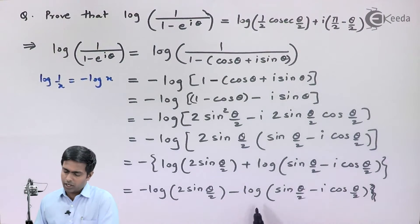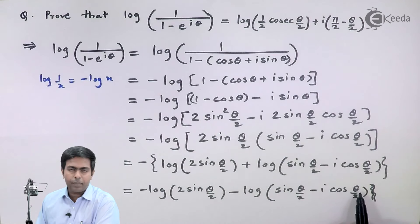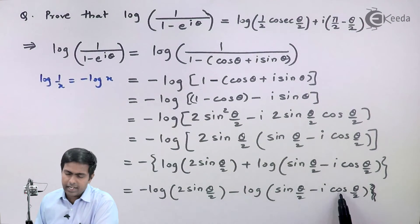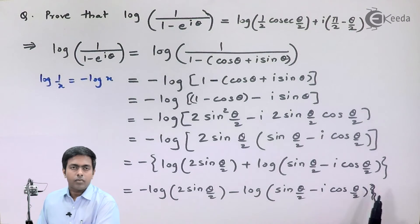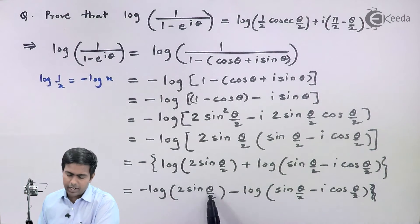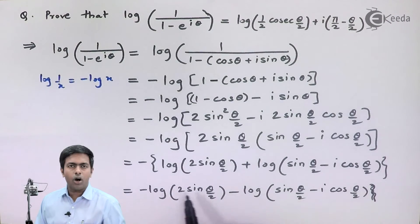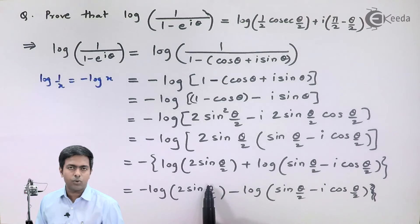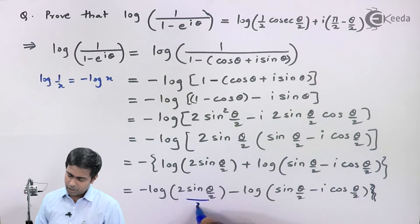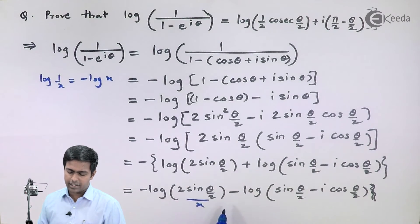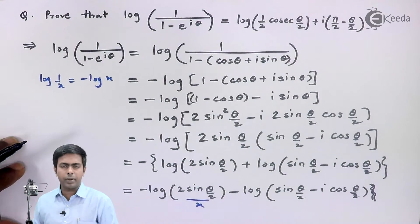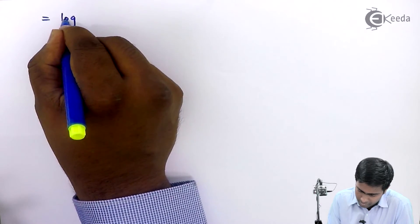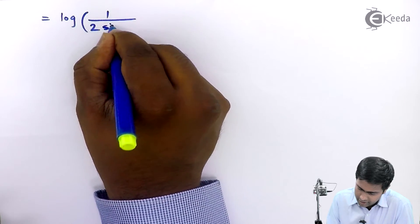The second term is the logarithm of a complex number, but it is not yet in standard form — we need the cos term as the real part and the sin term as the imaginary part. For the first term, minus log of 2·sin(θ/2), treating it as minus log(x) we apply log(1/x) = minus log(x) again, so it becomes log of 1 by 2·sin(θ/2), which equals log of (1/2)·cosec(θ/2).